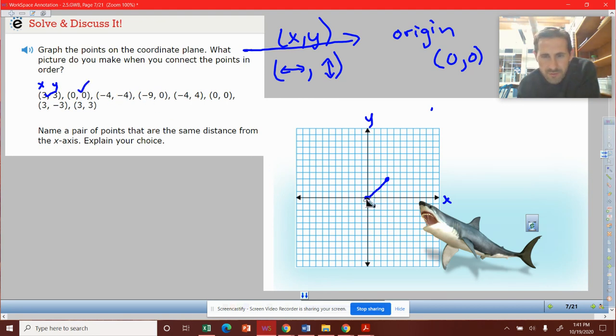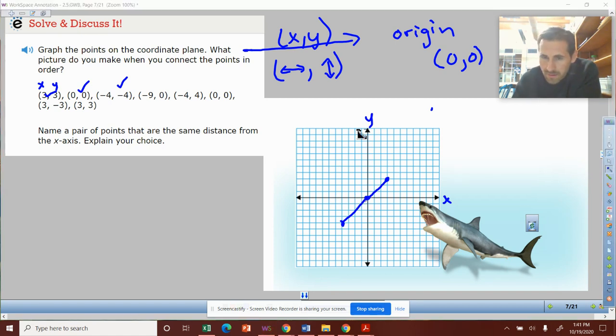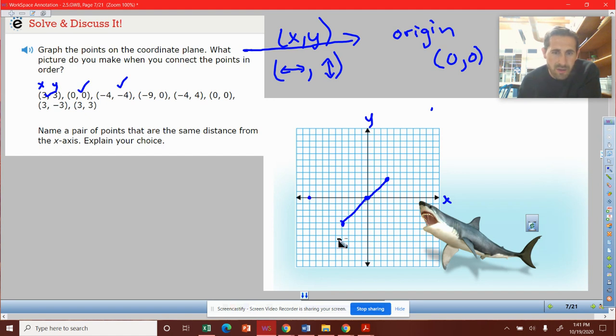Now we can go negative four, negative four. So we go back four and then down four to plot that point. Then they want us to go negative nine, zero. So we got to go negative nine - that's negative four, negative five, negative six, negative seven, negative eight, negative nine - and we go up zero, so I don't get to go anywhere up or down, just zero.